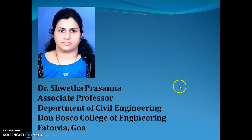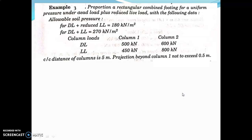Hello, my dear students. Today let us discuss the rectangular combined footing. Last class I explained about trapezoidal and strap footing. So today let us take a numerical on rectangular combined footing: proportion a rectangular combined footing for uniform pressure under dead load plus reduced live load with the following data. Allowable soil pressure for dead load plus reduced live load is equal to 180 kilonewton per meter square.